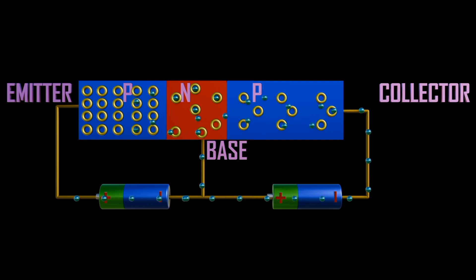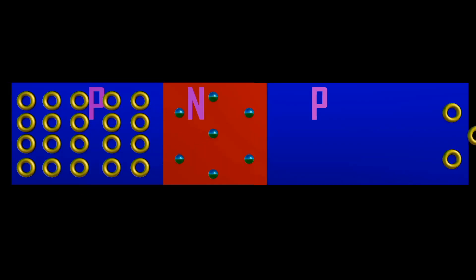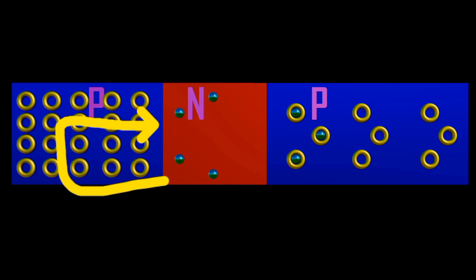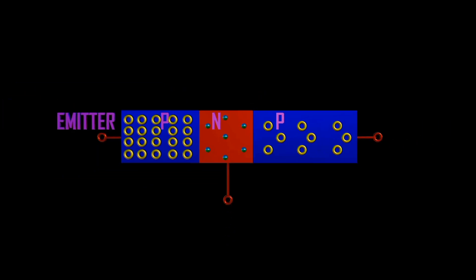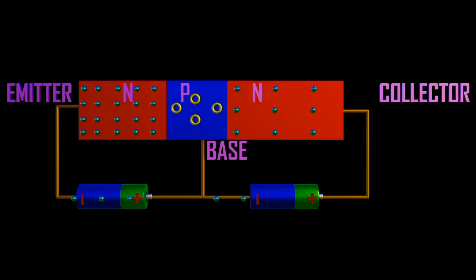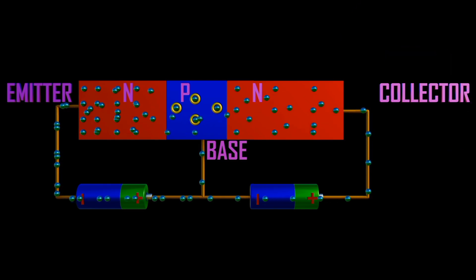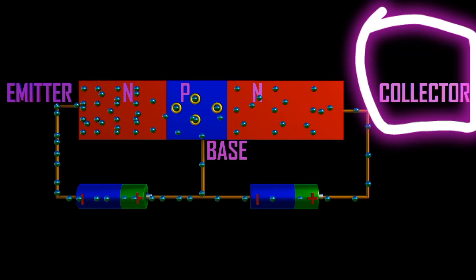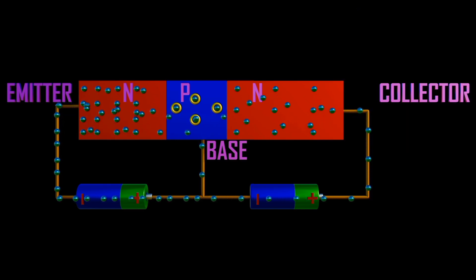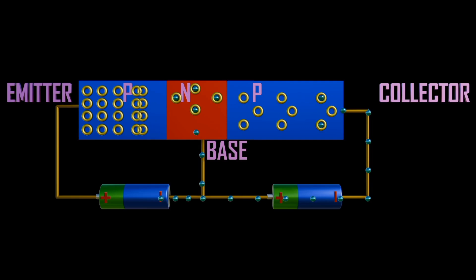Forward current is the amount of current that enables electrons to jump across the junctions of the BJT. The collector is always reverse biased with respect to the base. In NPN, the collector receives holes at its junction. In PNP, the collector receives electrons at its junction.